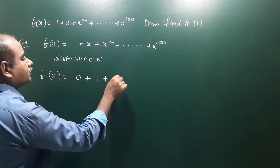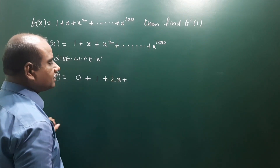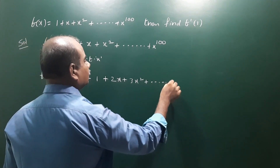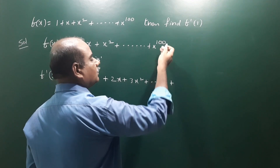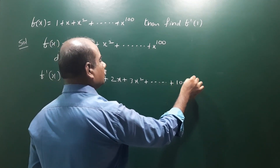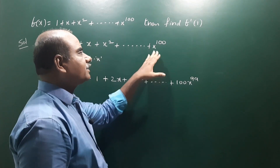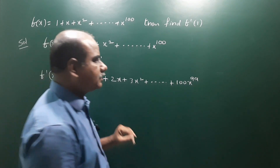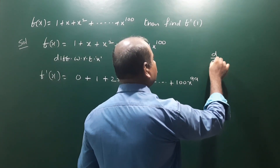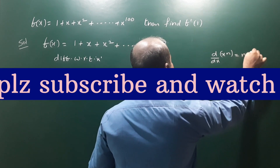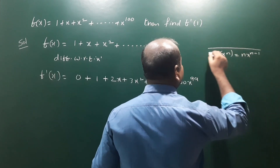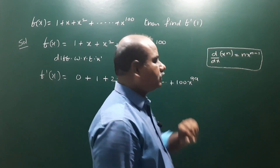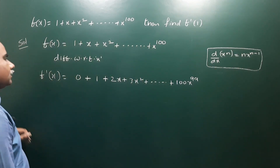Derivative of x² is 2x. Next, the derivative of x³ is 3x². And so on. The derivative of x^400 is 400x^399, using the power rule: the derivative of x^n is n times x^(n-1), so the power comes down and decreases by one. So we get 400 times x^399. This gives us f'(x).